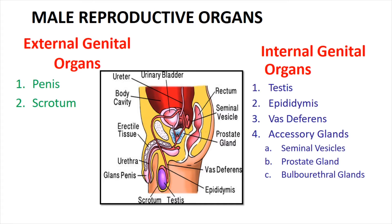Which are the external genital organs? In the figure, there are two external genital organs. First one is the penis and second one is the scrotum.